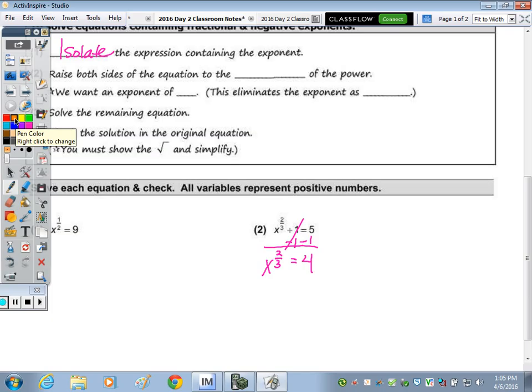Step number two is to get an exponent of one, we have to raise this term to the reciprocal power. We want an exponent of one because x to the first is just x. So what's the reciprocal of one half? Two over one. Do I need to put the two over one? No. So I'm actually going to square it because two over one is two. Square both sides. What is x to the one half squared? x to the first. So this cancels the exponent out because two over two is one, equals 81.